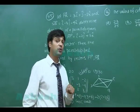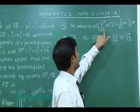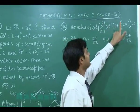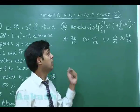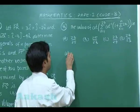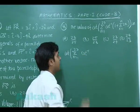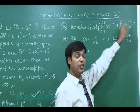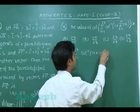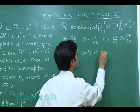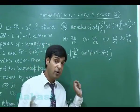Question 46: Find the value of cot(Σ from n=1 to 23 of cot⁻¹(1 + Σ from k=1 to n of 2k)). The inner sum Σ_{k=1}^{n} 2k = n(n+1), so the expression inside cot⁻¹ becomes 1 + n(n+1) = 1 + n + n². This allows us to write it as tan⁻¹(1/(1 + n + n²)).